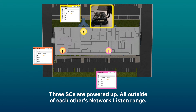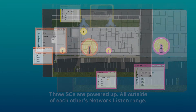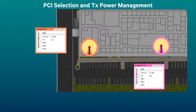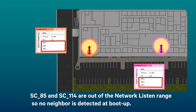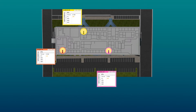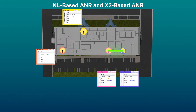Three small cells are initially powered up. Small cell 114 chooses a PCI and transmits at maximum power level based on RF conditions. Small cell 85 chooses a PCI and also transmits at maximum power level. Neither small cell has detected a neighbor at boot up since their neighbors are outside network listen range. As more small cells are installed and powered up, they discover each other via network listen and X2 based ANR.